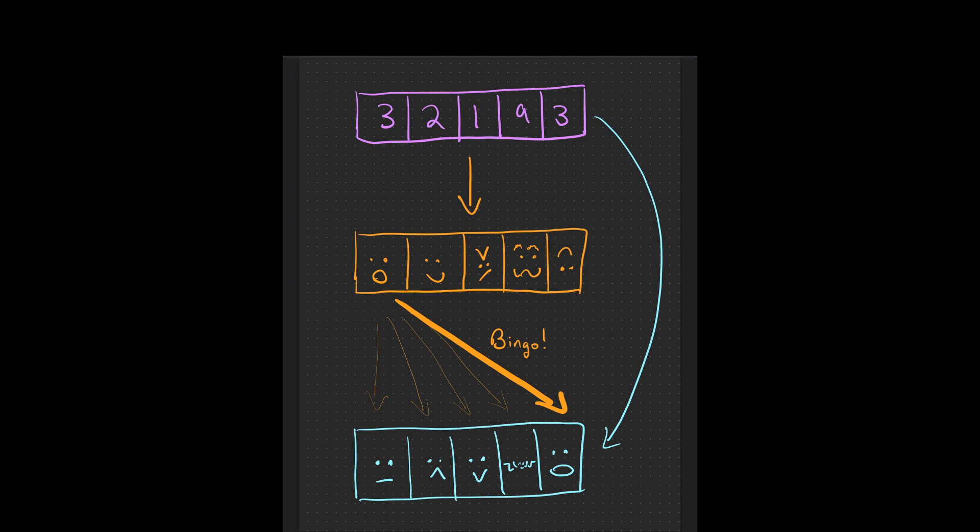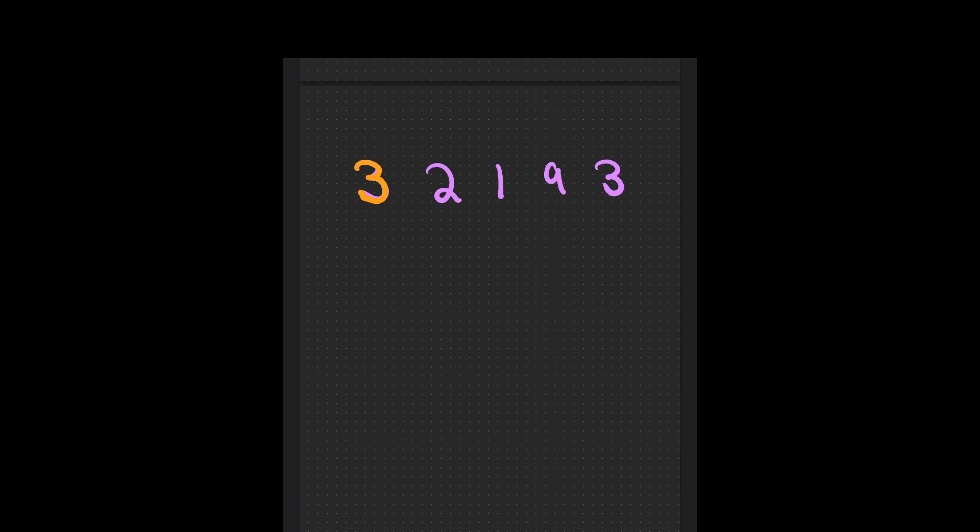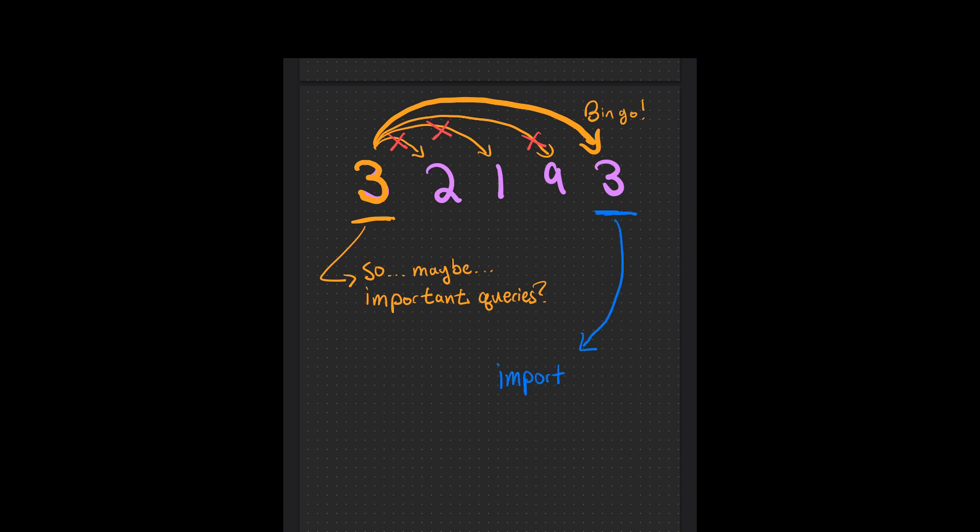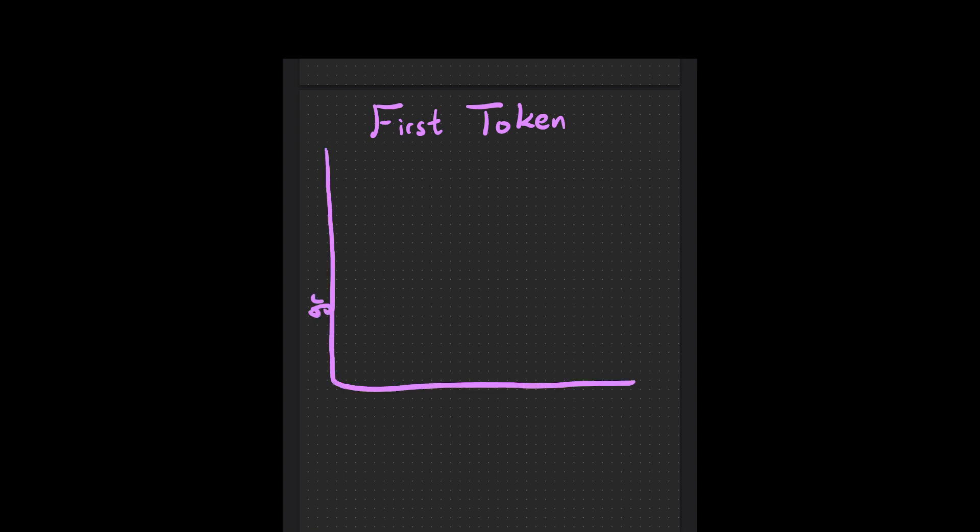Well, each token in the sequence has a key value in a query. The query of a token says, I'm looking for a thing that looks like me. The key of a token is sort of like its identifier, and the value is the actual value that gets used. The query of a token basically tries to look at the key of each token and find how well they match with the highest score given to the best matching one.